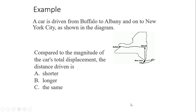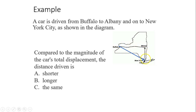A car is driven from Buffalo to Albany and on to New York City. The displacement is the straight-line distance from Buffalo to New York City, while the distance is the total path driven through Albany. Compared to the magnitude of the car's total displacement, the distance driven is longer.